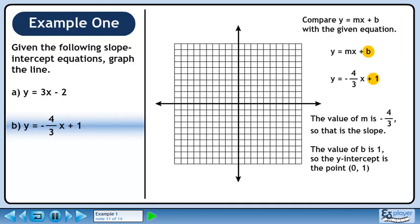The value of b is 1, so the y-intercept is the point (0, 1). Plot the y-intercept.